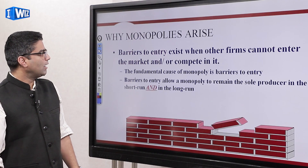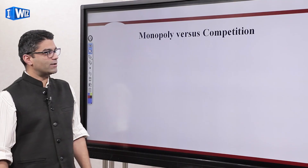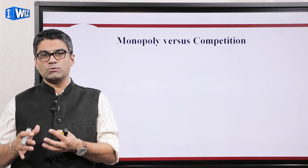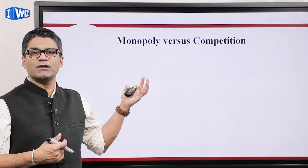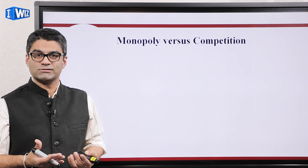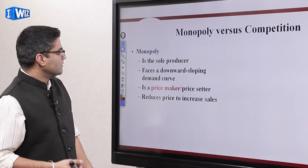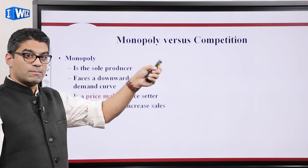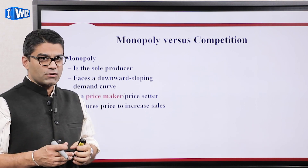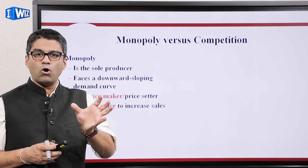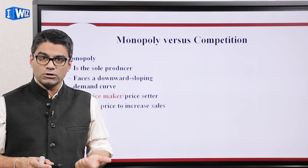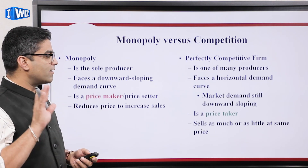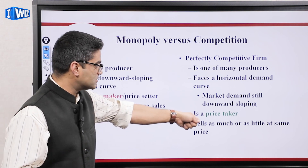That's the reason why monopolies continue to exist. You'll see when we get to the end of it that every producer would like to act like a monopolist, but every consumer would like the market to be perfectly competitive. Without barriers to entry, it's very hard for a monopolist to exist because the market becomes more and more competitive. So monopoly is going to be the sole producer, and it's going to face the downward sloping part of the demand side.